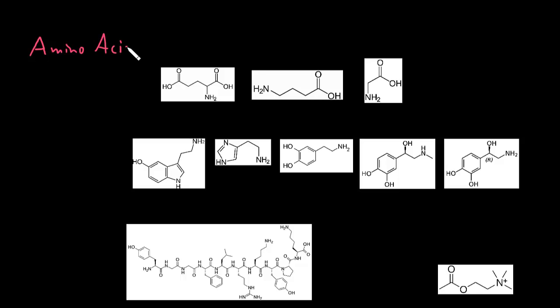The first category of neurotransmitters is the amino acids. Amino acids have an amino group and a carboxylic acid group, and there are lots of different types of amino acids, but just a few of them function as neurotransmitters in the nervous system.